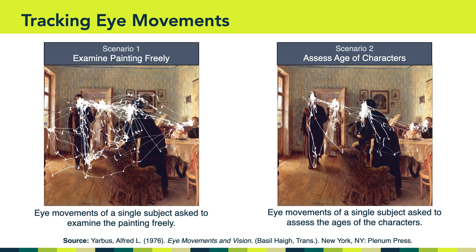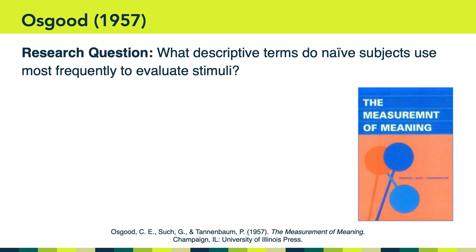In contrast, we see the eye movements of a subject asked to assess the age of the characters — that's top-down processing, because the user came with the explicit goal of assessing age. Notice the difference in eye-tracking movements between the two scenarios. Even though it's the same painting and the same visual stimuli, what was looked at and for how long was quite different. I like this example because it really illustrates how human perception is both bottom-up and top-down.